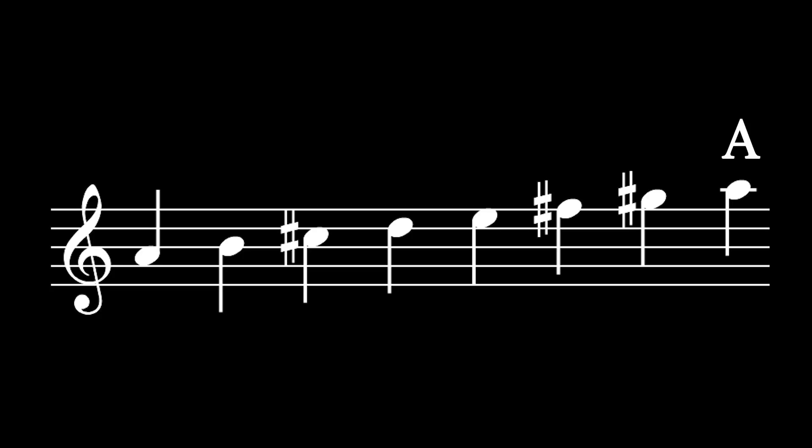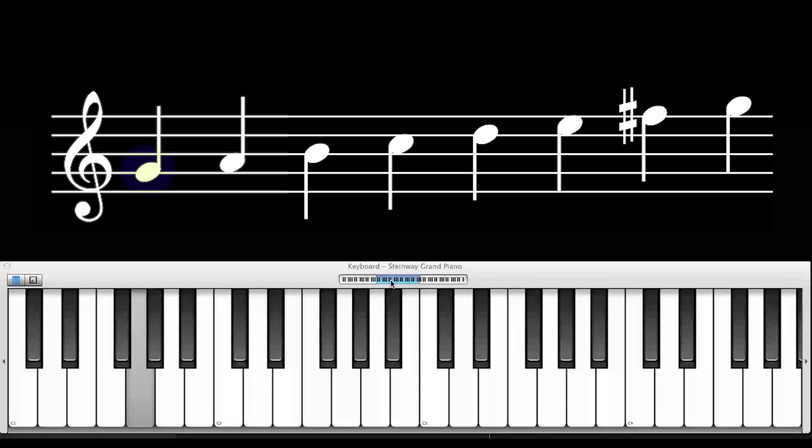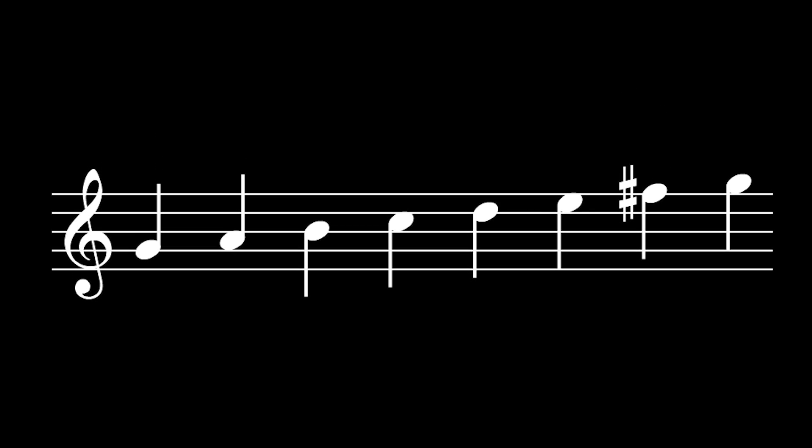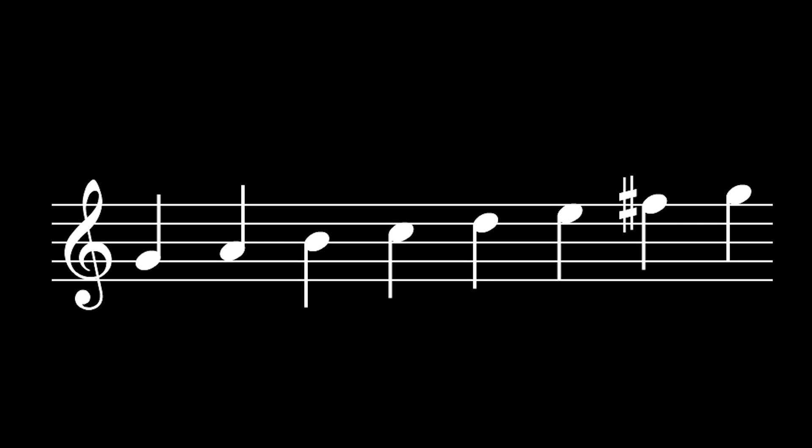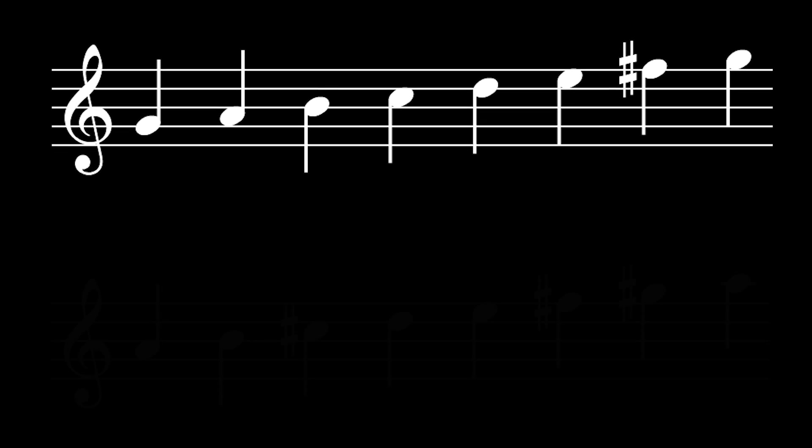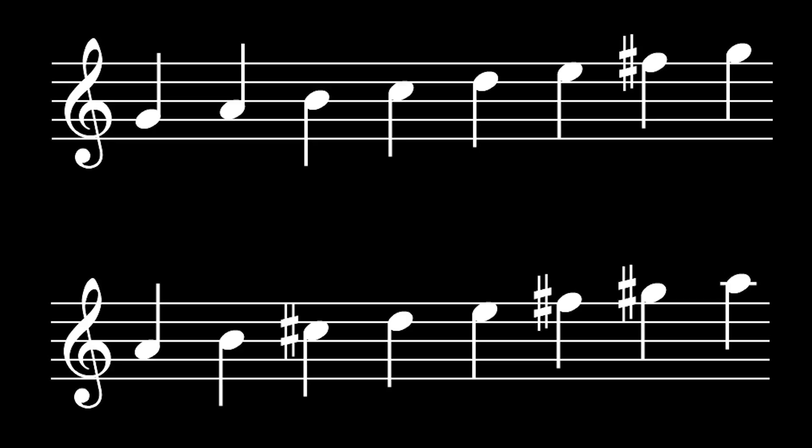Let's look at the major scale in the key of G so we can begin to see what they have in common. The notes of the major scale in the key of G are G, A, B, C, D, E, F-sharp. There are several different notes in the scale compared to the key of A, so why do they both sound like a major scale?